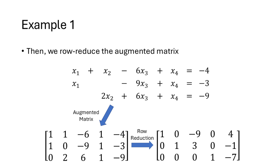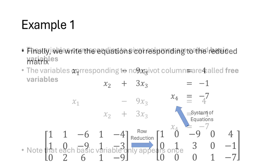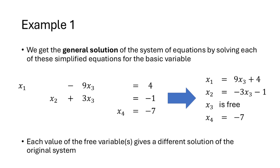Our next step is to row-reduce that matrix using the process that we learned in the previous lecture. This is the reduced echelon form of that augmented matrix. Finally, we write the system of equations that corresponds to the reduced matrix. Notice how much simpler these equations are compared to our original system of equations. Once we have our reduced system of equations, we can identify the basic variables and the free variables. The variables that correspond to pivot columns are called basic variables, and the variables that correspond to the non-pivot columns are called free variables.